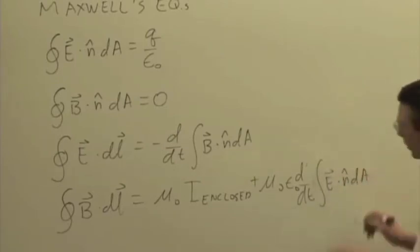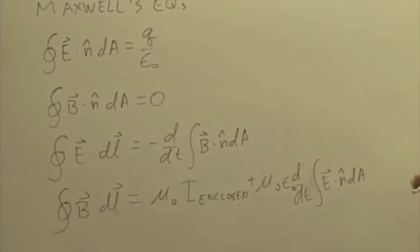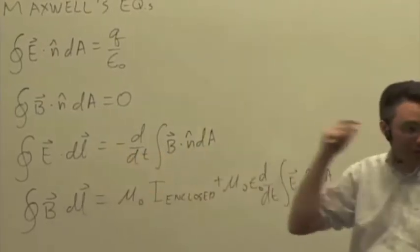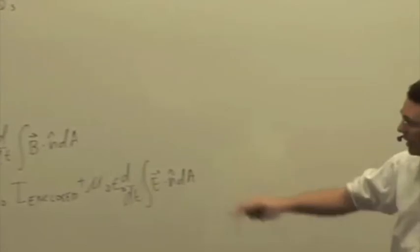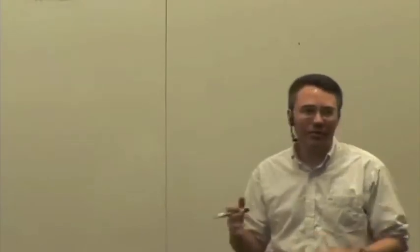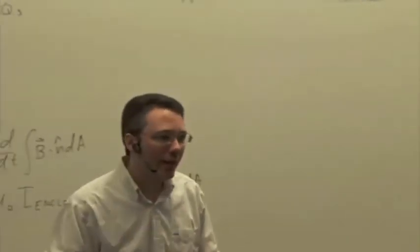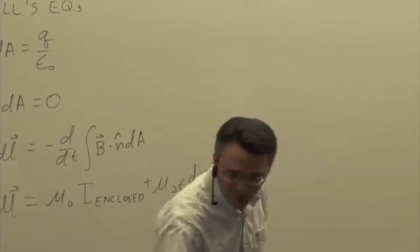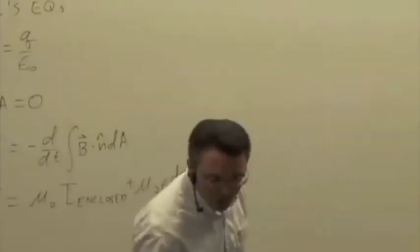So what we went through last time, we said because we have this changing magnetic field which can lead to an electric field for Faraday's Law, and a changing electric field which can lead to a magnetic field for this Ampere-Maxwell Law, could we have a situation where we had electric fields changing, making magnetic fields changing, making electric fields changing, et cetera. And we showed the example of this pulse traveling through space. So let's just review that.